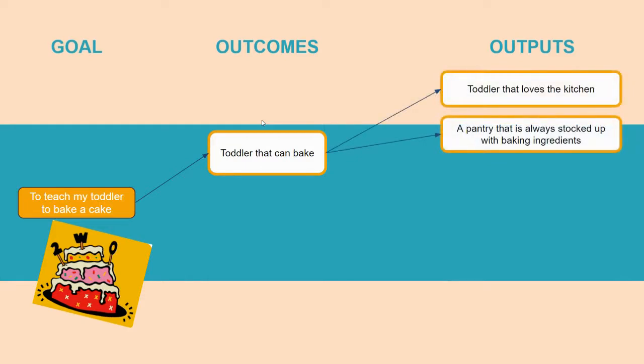And if I have a toddler that can bake, one of the outputs I could have is that my toddler loves the kitchen. I could also have, as a result of that, a pantry that is always stocked up with baking ingredients. Another direct outcome of my goal is an edible cake. Maybe my toddler has done the miraculous.